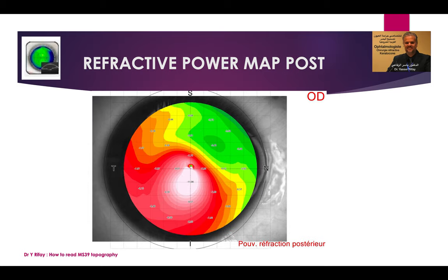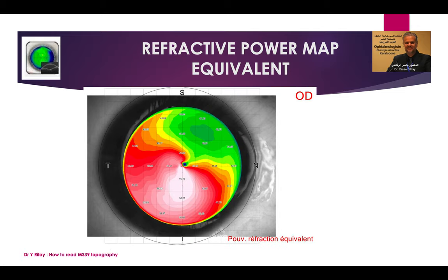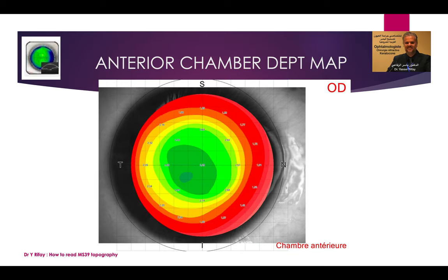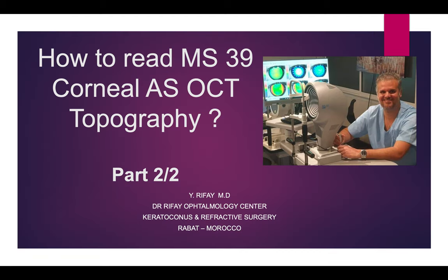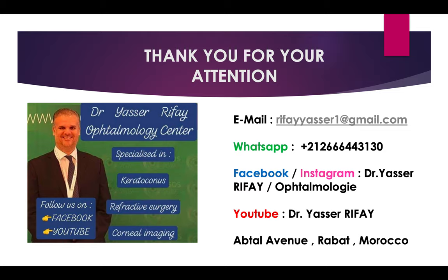There are other less commonly used maps: the refractive power map of the anterior surface, the refractive power map of the posterior surface, the equivalent refractive power map, and the anterior chamber depth map — which gives the depth of the anterior chamber at every point, measured from the lens or from the iris. Thank you very much. You will follow the second part of this presentation in another link, which will cover the other options of the MS-39.